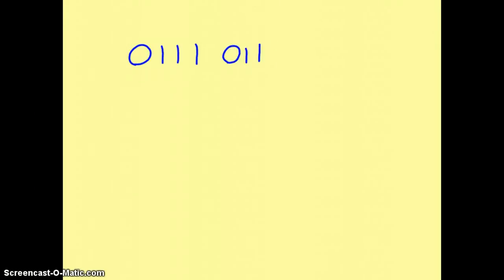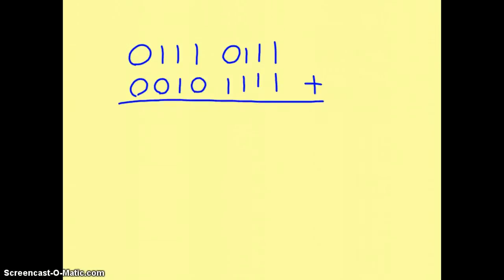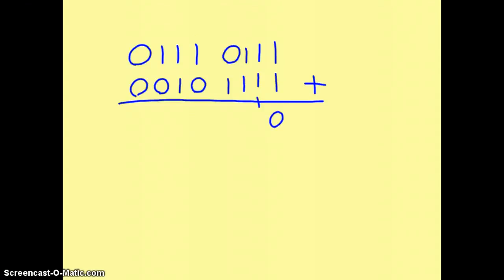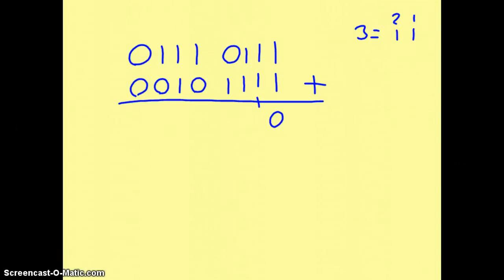To go through one more example: we start off with 1 plus 1, which gives us 0, carry the 1. Then we end up in the situation where we've got 1 plus 1 plus 1. In decimal this gives us 3. Looking at what 3 is with column headings, it's 1, 1. So instead of 0 carry 1, this time we take 1, carry the 1. So 1 plus 1 plus 1 gives us 1, carry the 1.